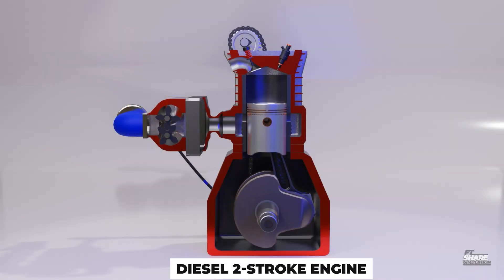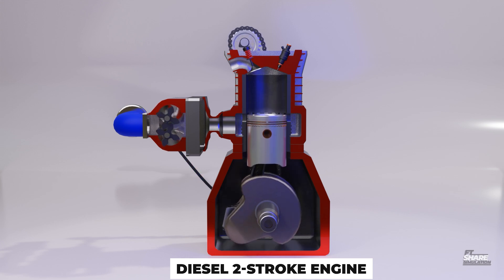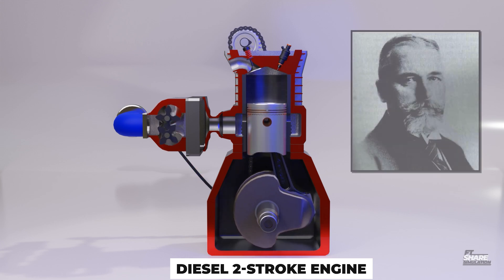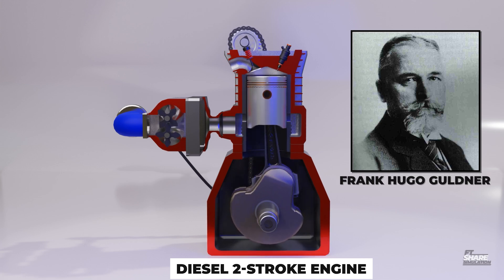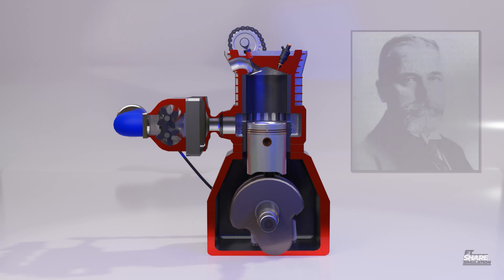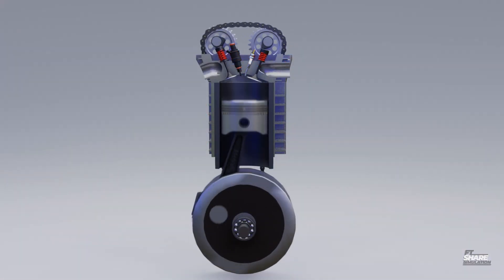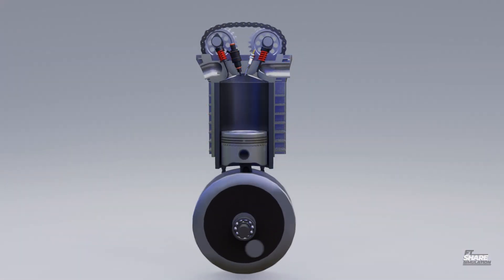The two-stroke diesel engine itself was first discovered by a German engineer born in 1866 named Frank Hugo Goldner in 1899, precisely when Hugo was 33 years old. However, the first two-stroke diesel engine couldn't achieve good fuel consumption or sufficient power, which led to the project being abandoned in 1901.